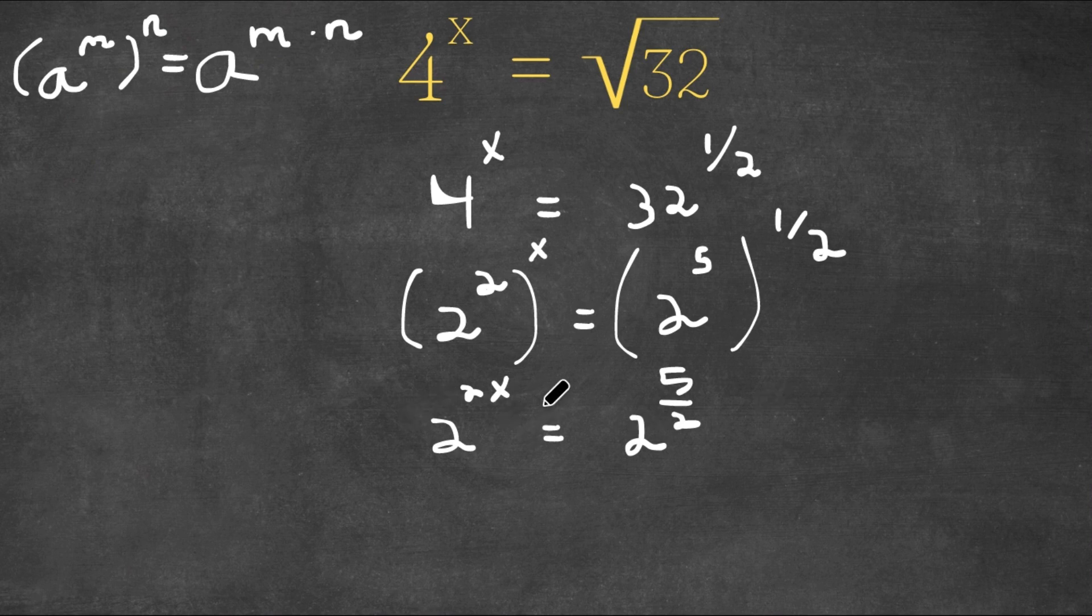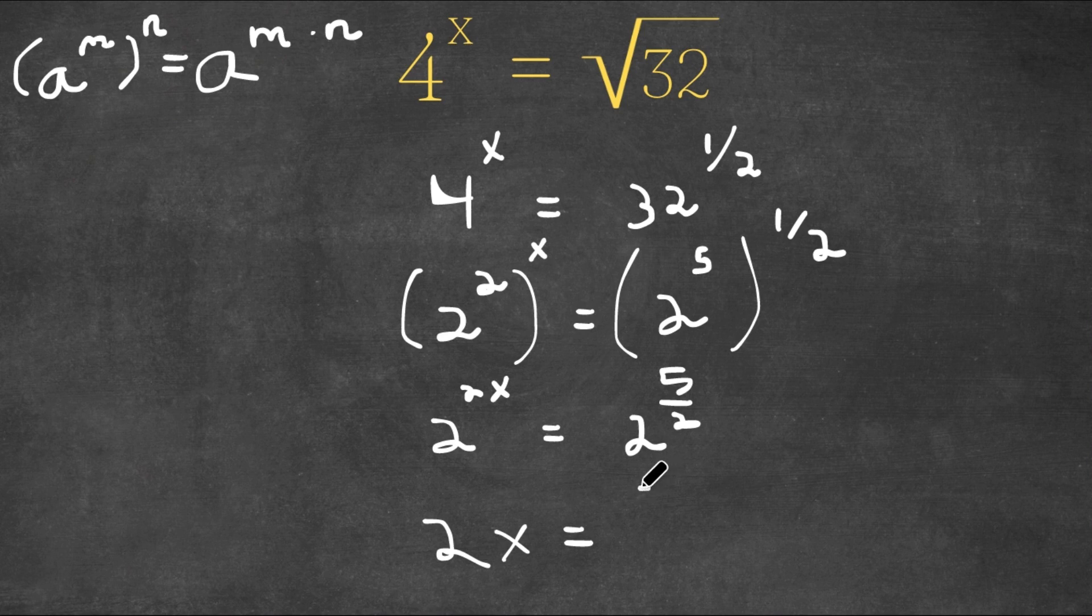Now, as you can see, we have the same bases, both of the bases are 2 and 2. So now this means that the exponents here are the same as well, meaning 2x is equal to 5 over 2.